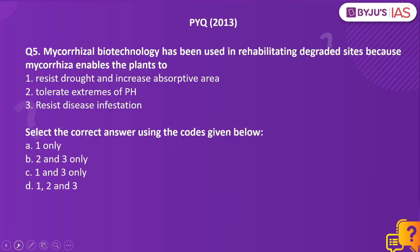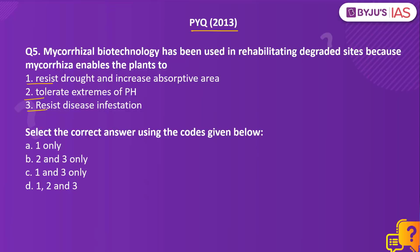Now let us take up a previous year question from the Prelims paper 2013. Mycorrhizal biotechnology has been used in rehabilitating degraded sites because mycorrhiza enables plants to: 1. Resist drought and increase absorptive area. 2. Tolerate extremes of pH. 3. Resist disease infestations. Select the correct answers using the codes given below.